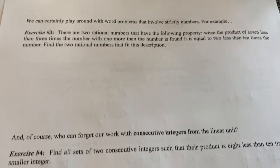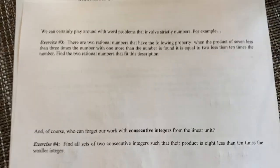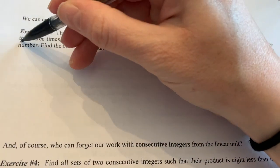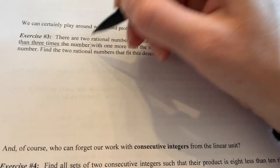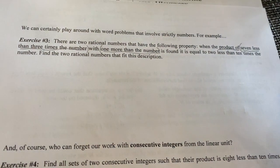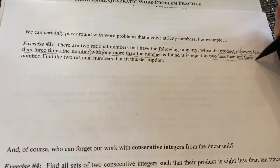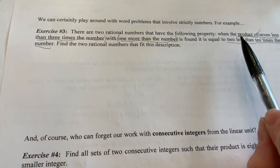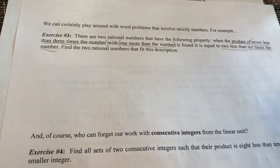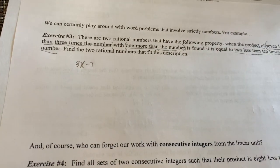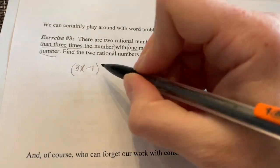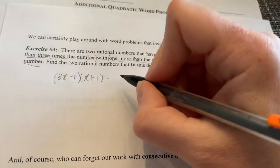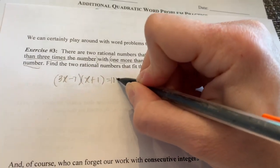Exercise 3: there are two rational numbers with the following property. The product of 7 less than 3 times the number — that's (3x minus 7) — with 1 more than the number — that's (x plus 1) — is equal to 2 less than 10 times the number, which is (10x minus 2). Got to be super careful with this. We'll use x to represent the number.